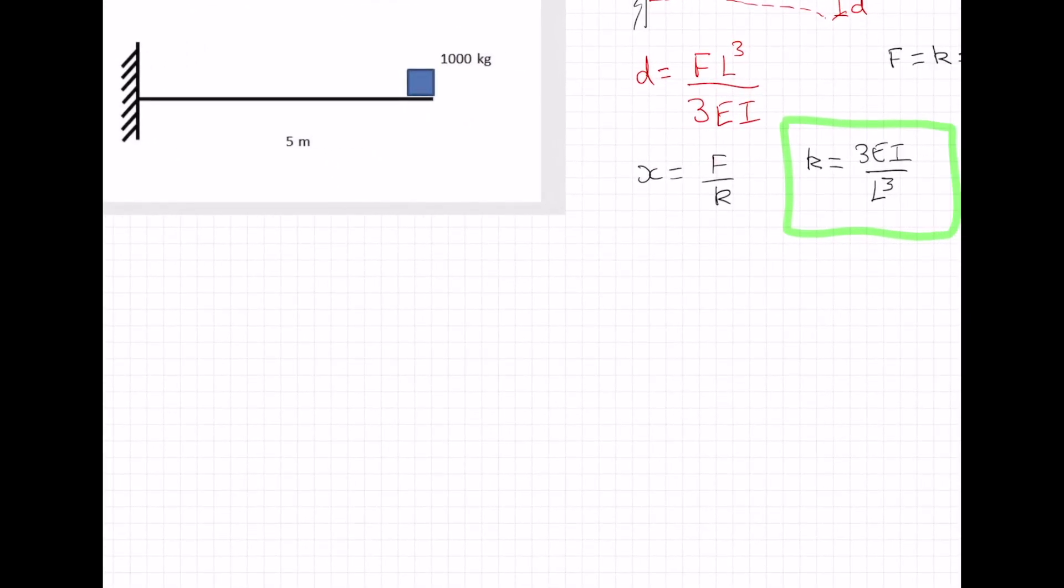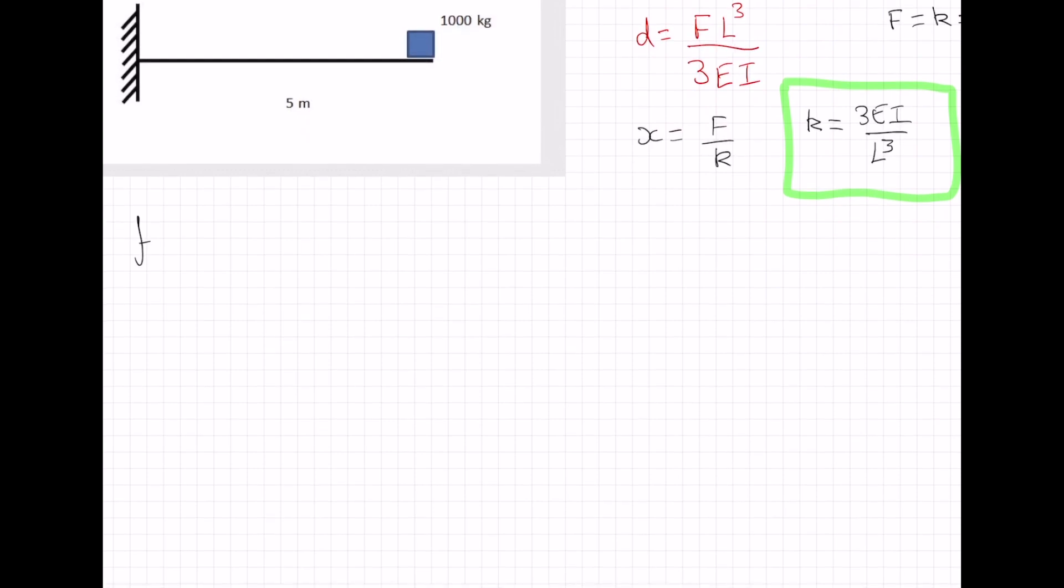Now why does that matter? We need to find out the natural frequency of this system. I think it doesn't say, but I know that the question wanted it in hertz rather than radians per second. So it's 1 over 2 pi times square root of K over M. So we have 1 over 2 pi square root of 3EI over L cubed times M.